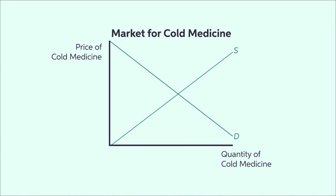Let's use cold medicine as an example. Here we see a normal market. At the optimal rate, just enough cold medicine will be produced so that everyone who is able to pay the optimal price buys it. Producing more cold medicine will lower the price, and producing less cold medicine will raise it. E-Star will get the company the most amount of money selling the highest amount of medicine. Even though we know that E-Star is the efficient production and demand rate, it isn't necessarily fair.